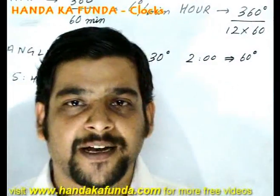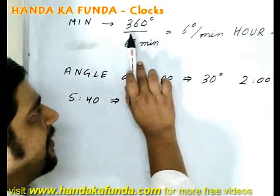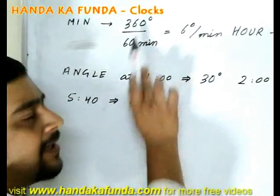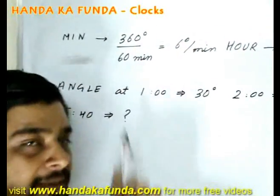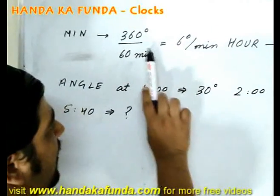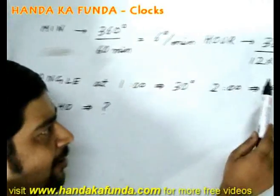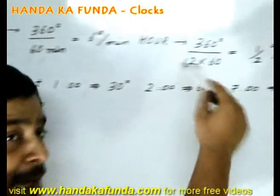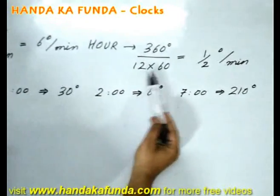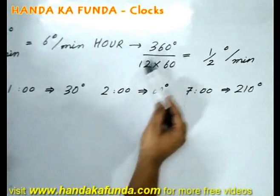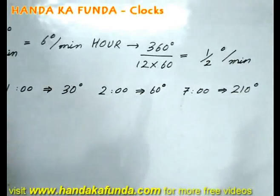Let us figure out the speed of the minute hand and the hour hand. The minute hand moves 360 degrees — one full circle — in 60 minutes, so its speed is 6 degrees per minute. The hour hand completes one full circle in 12 hours, or 720 minutes. So that is 360 divided by 720, or half a degree per minute.